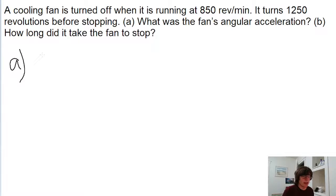So to start us off with part A, recall that one of our angular kinematics equations says that omega squared minus omega naught squared is equal to 2 times theta times alpha.